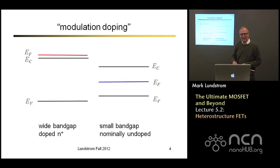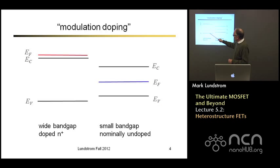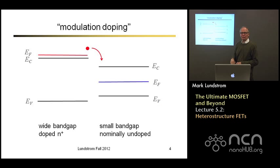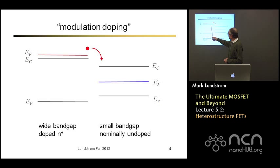There's a very elegant trick that people came up with in the late 70s and early 80s to produce very high mobilities, called modulation doping. It works like this: take a wide band gap semiconductor doped n-type, and a smaller band gap semiconductor that's pure with no dopants. When you put these two together, electrons move from the higher Fermi level to the lower Fermi level, ending up in the undoped small band gap layer where they have high mobility — no dopants to scatter off of. We dope one layer, the electrons transfer to the layer we're going to use, and now we've got them there without doping.